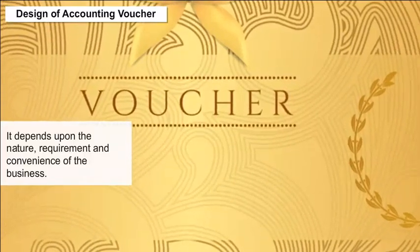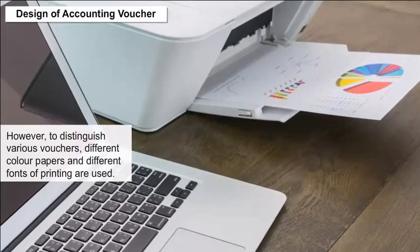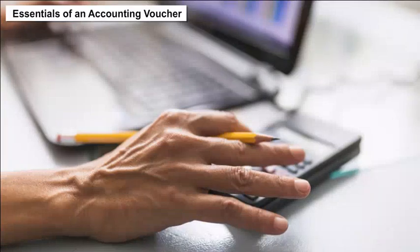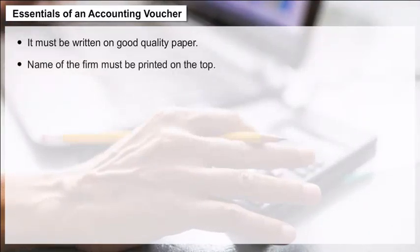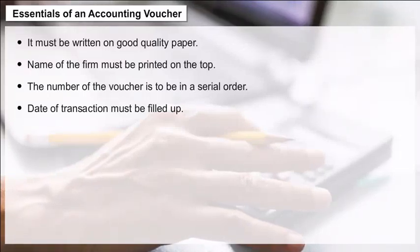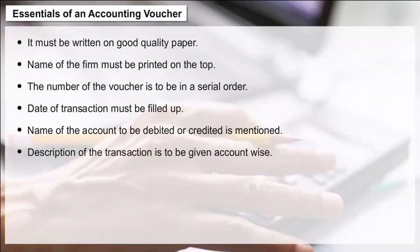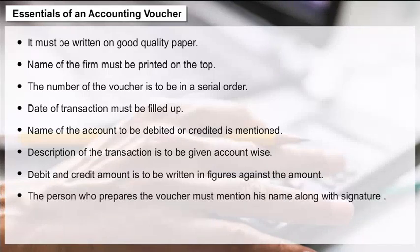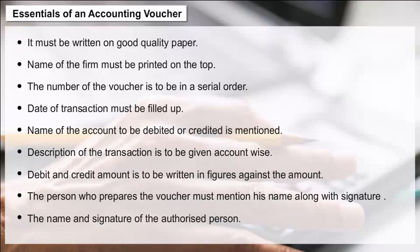The design of an accounting voucher depends upon the nature, requirement, and convenience of the business. There is no set format; different color papers and fonts are used to distinguish various vouchers. Essential elements include: it must be written on good quality paper; the firm's name must be printed on top; the voucher number must be in serial order; the date of transaction must be filled in; the name of the account to be debited or credited must be mentioned; description of the transaction must be given account-wise; debit and credit amounts are written in figures; and the preparer's name and signature along with the authorized person's name and signature must appear on the voucher.